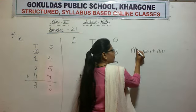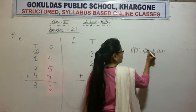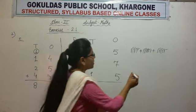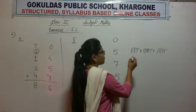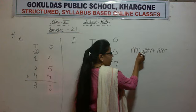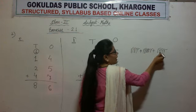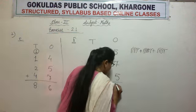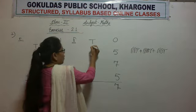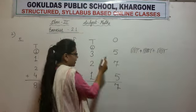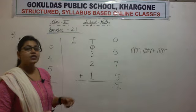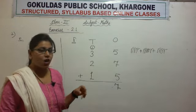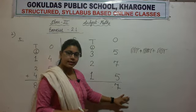Let us count: 1, 2, 3, 4, 5, 6, 7, 8, 9, 10, 11, 12, 13, 14, 15, 16, and 17. We got a 2-digit answer. Because we got 2 digits, we have to regroup, since we can only write 1 digit in each column. So we write 7 in the 1's column and carry 1 to the 10's column.